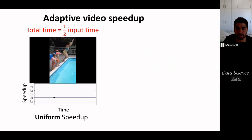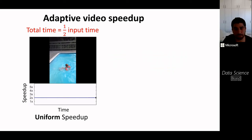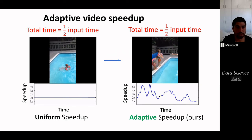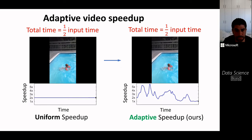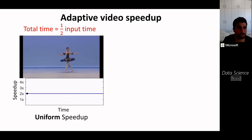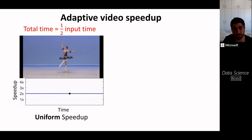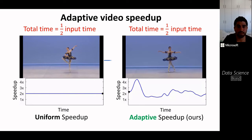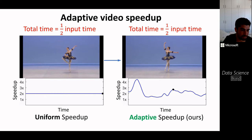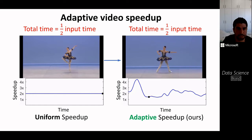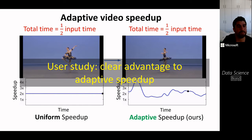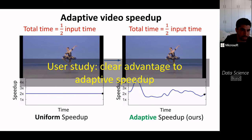Here are a few examples. A video of people jumping into a pool was uniformly sped up by 2×, so its total duration is half the original. On the right, using adaptive speed-up, each segment was sped up as long as SpeedNet determined it to be of normal speed — the result is the same total duration but much more natural and less jerky. Another example is a dancer: uniformly sped up by 2× on the left, and using our adaptive speed-up on the right, with a clear advantage confirmed in a user study.